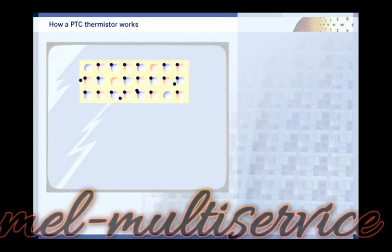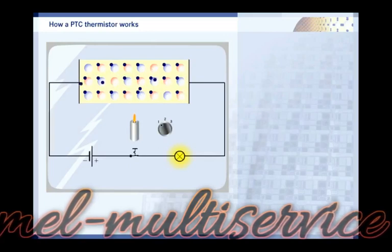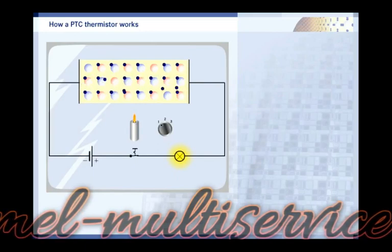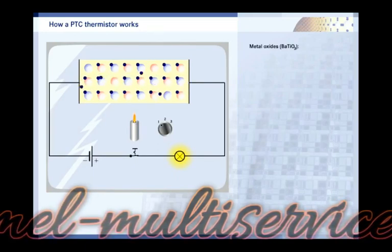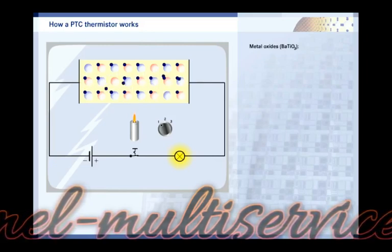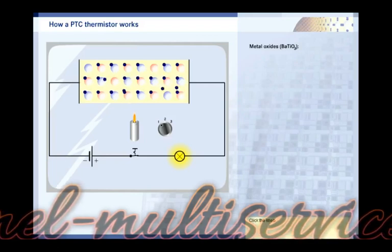All metals are cold conductors, which means they have a positive temperature coefficient and their resistance rises gradually along with the temperature. PTC thermistors, however, are special cold conductors and are made of semi-conducting metal oxide, usually barium titanate. Try out the temperature levels.